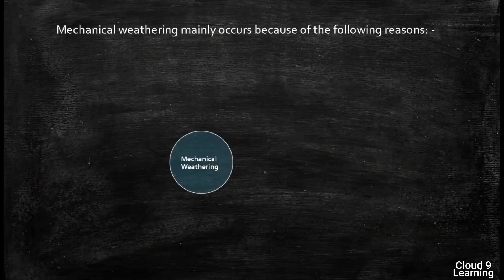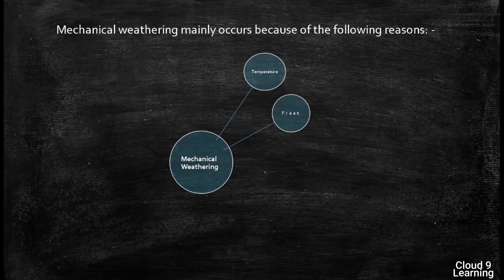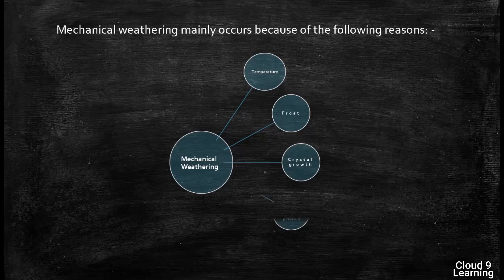Mechanical weathering occurs because of the following reasons: first is temperature, second frost, third crystal growth, fourth release of pressure, and fifth water.